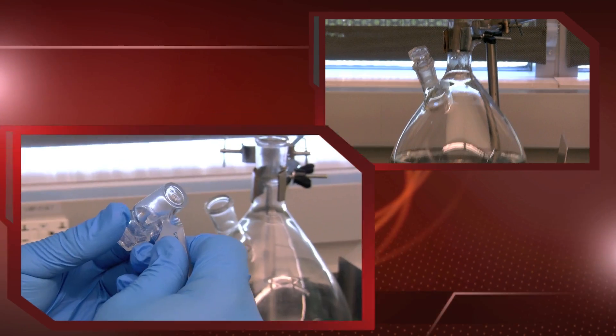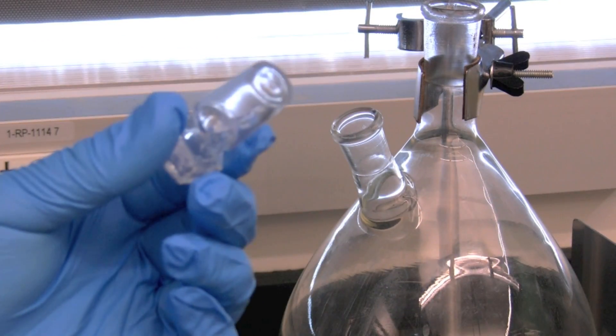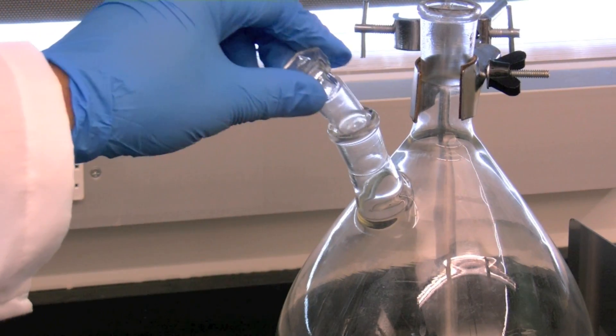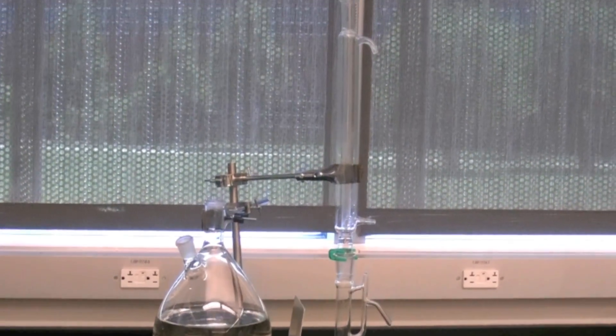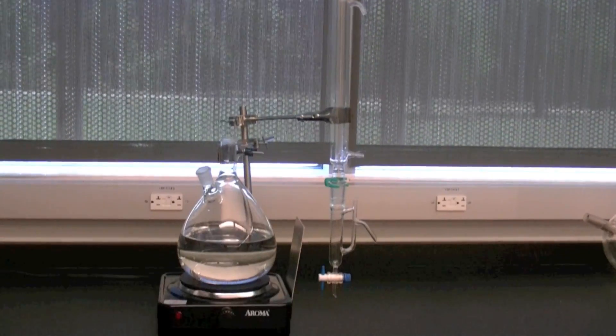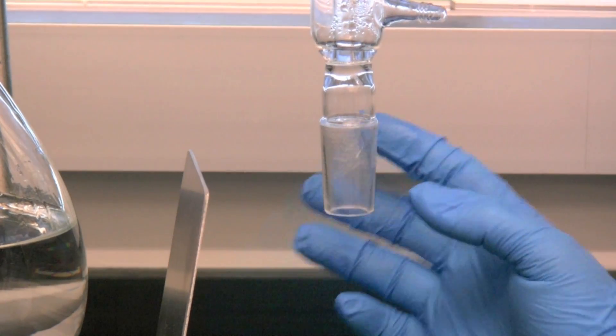Coat the boiling flask stopper with a thin layer of silicone lubricant and place it in the boiling flask. Secure the condenser in place using the second metal tube clamp such that the male end faces downward and the tube clamp is attached slightly above the water inlet connection.